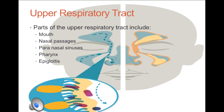Air enters the respiratory system through the mouth and nasal passages. It passes down the pharynx through the larynx. The larynx is covered by a small flap called the epiglottis. The epiglottis closes during swallowing, thus preventing food and/or drink from entering the airways.